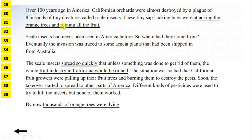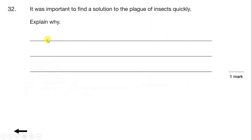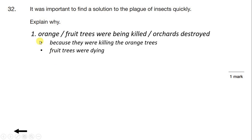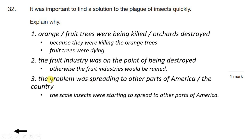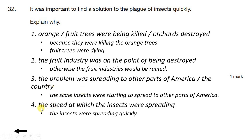As we were reading, we've underlined the key points to help us answer the question. We know that they were attacking the orange trees and ruining all the fruit, thousands of orange trees were dying, the scale insects spread quickly and had started to spread to other parts of America, and the whole fruit industry in California would be ruined unless something was done. To get the mark for this question, we can answer that orange or fruit trees were being killed or orchards destroyed, that the fruit industry was on the point of being destroyed, that the problem was spreading to other parts of America, or we can mention the speed at which the insects were spreading.